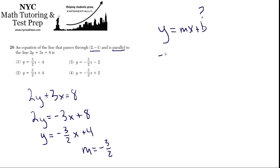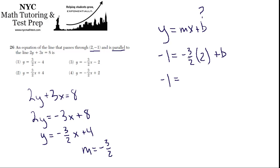So let's make our substitutions. We have negative 1 as the y-coordinate, equals the slope negative 3 over 2, times the x-coordinate which is 2 — we'll put it in parentheses so you know to multiply — and plus b, which is what we want to know. Negative 1 equals negative 3 over 2 times 2, which is just negative 3, plus b. So b, if you add 3 to both sides, is 2.